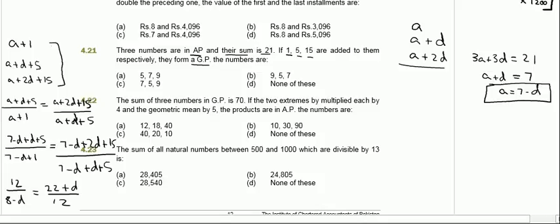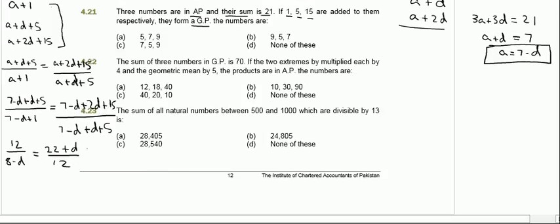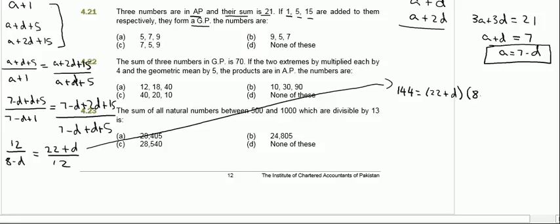Cross-multiplying: 12 times 12 gives 144, which equals (22 plus d) multiplied by (8 minus d). Expanding: 144 equals 176 minus 22d plus 8d minus d squared.